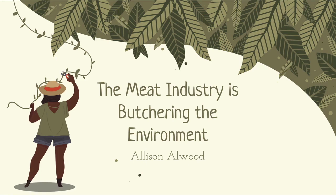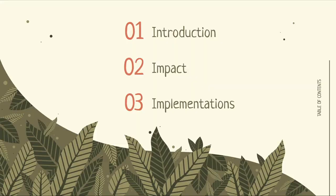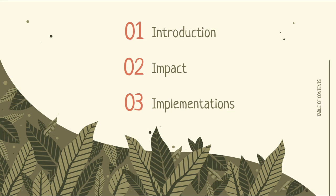Hi, everyone. My name is Allison Allwood, and I hope that you're having a happy and healthy Earth Week. Today, I will be talking about how the meat industry is butchering the environment. I will first be introducing the meat market itself, then talking about the impact it has on the Earth as a whole, and finally discussing implementations we can all incorporate in our daily lives. I have a major in marketing and dual minors in advertising and Spanish. I've been vegetarian for two years, and I am also a member of the Sustainability Ad Hoc Committee for the York College Student Senate.